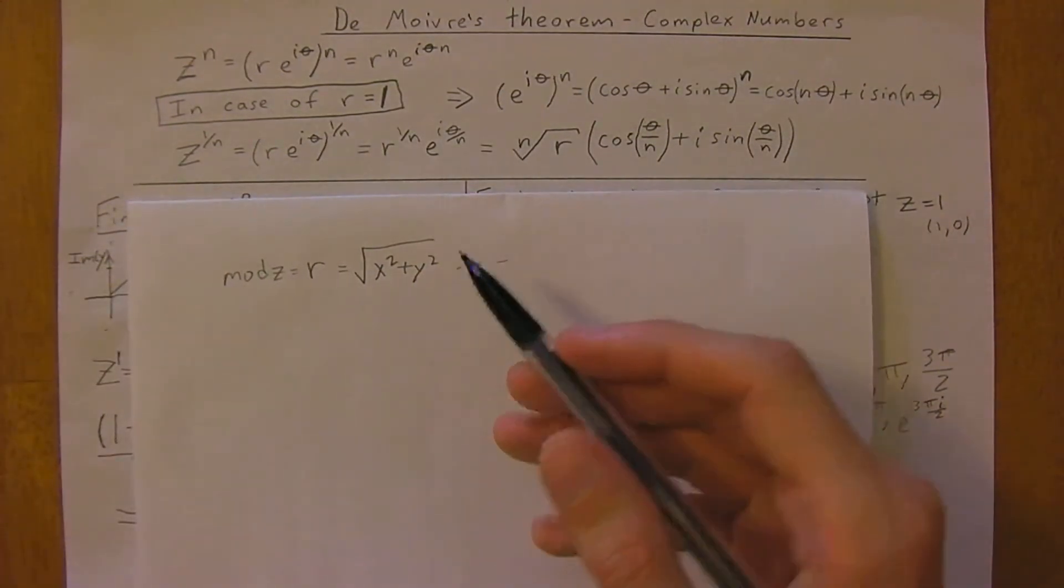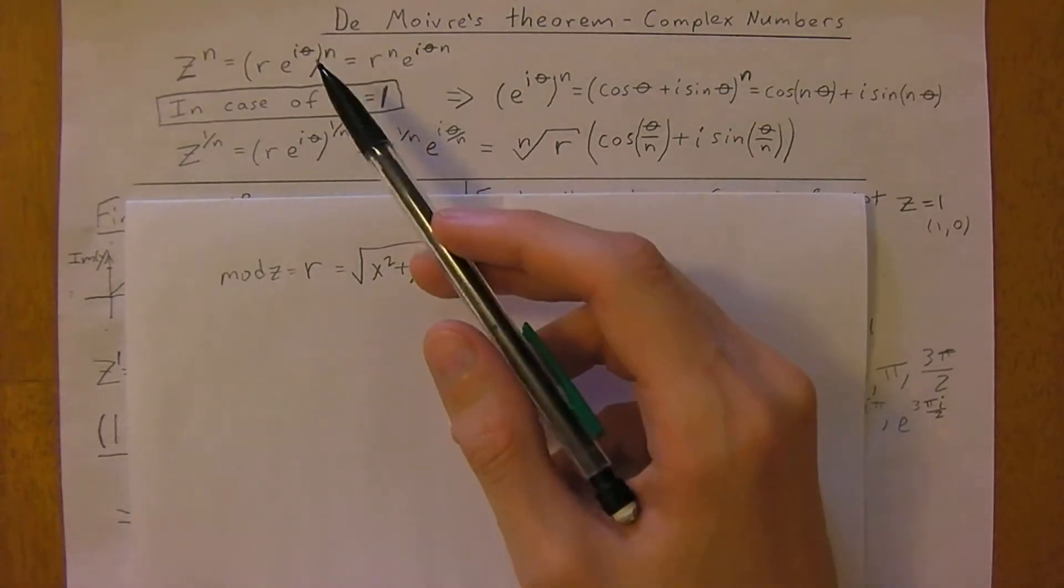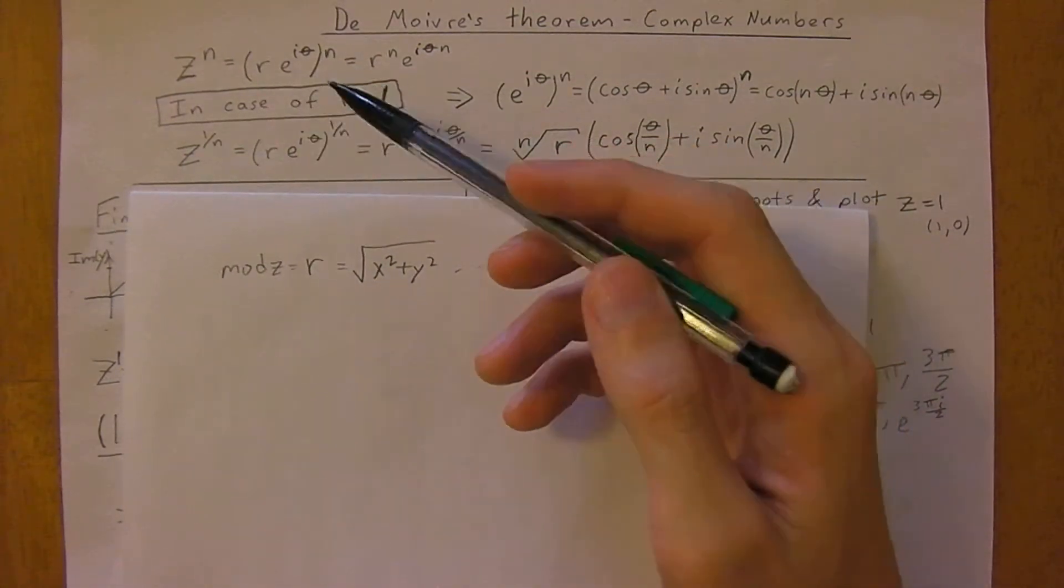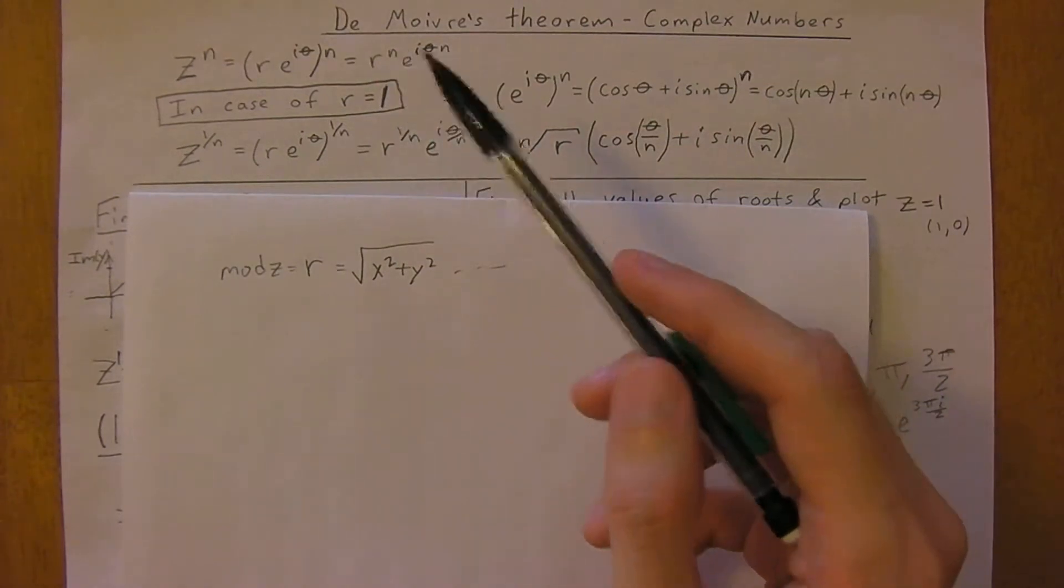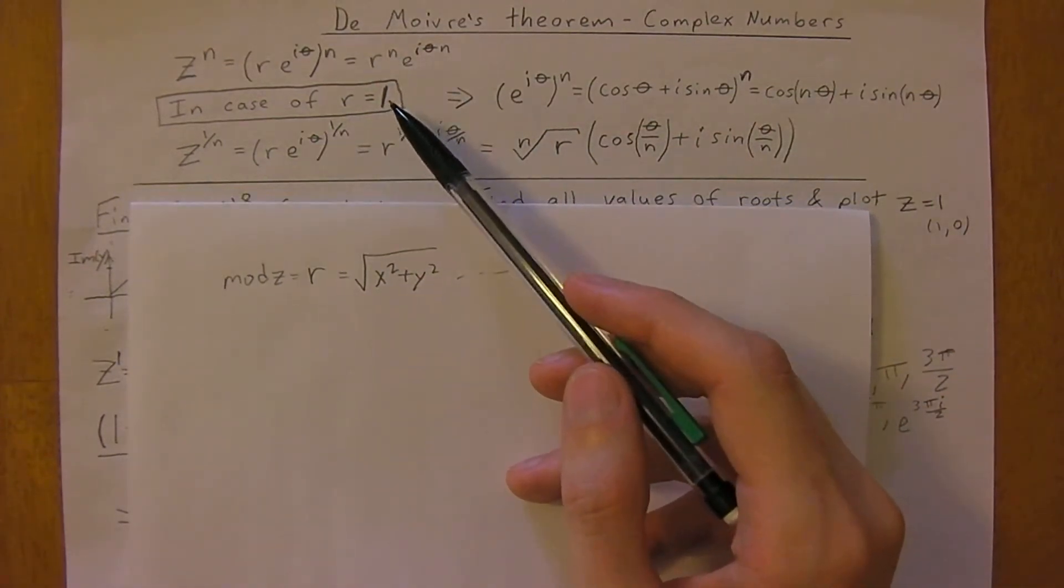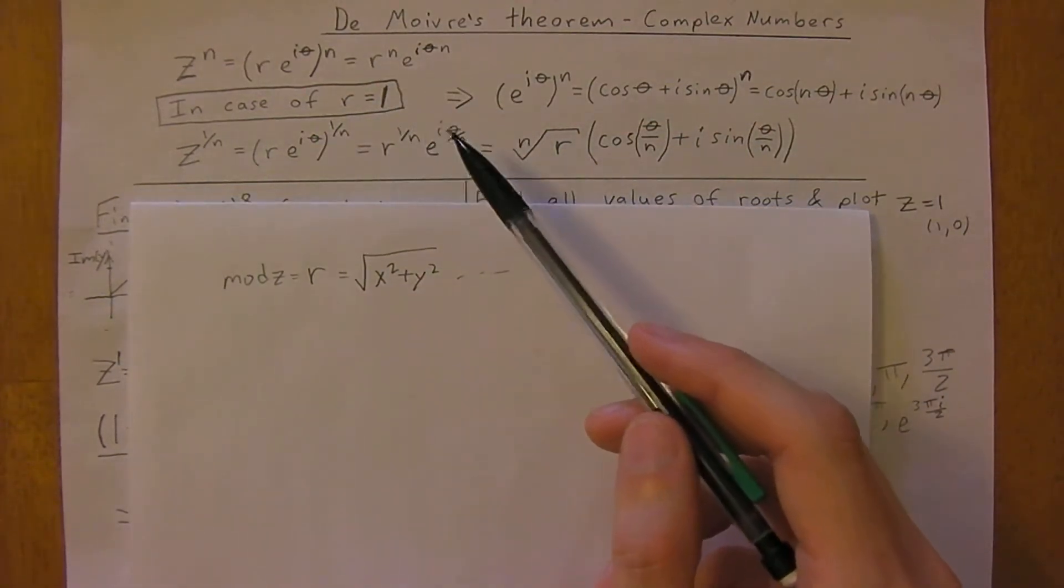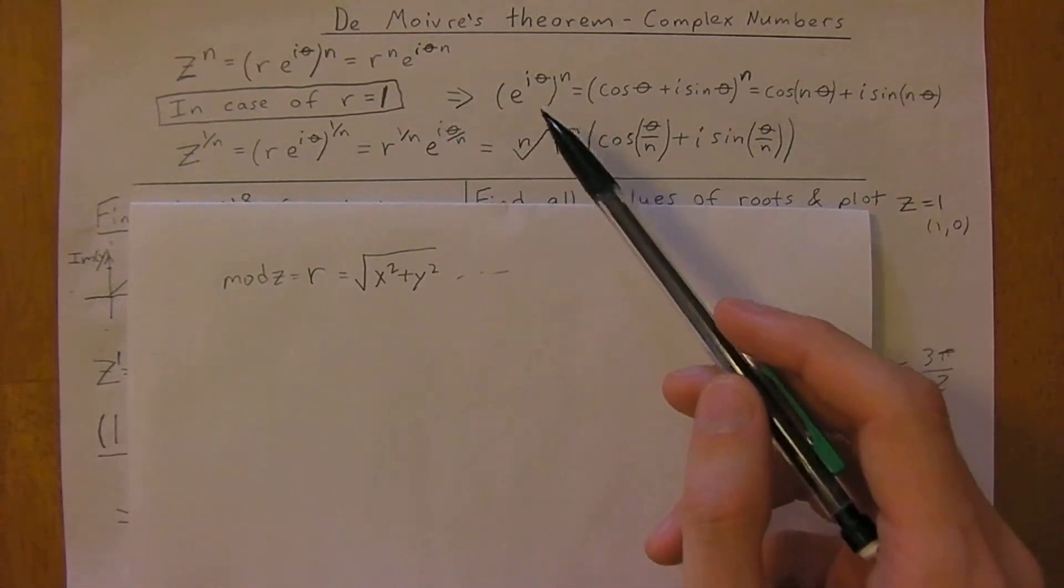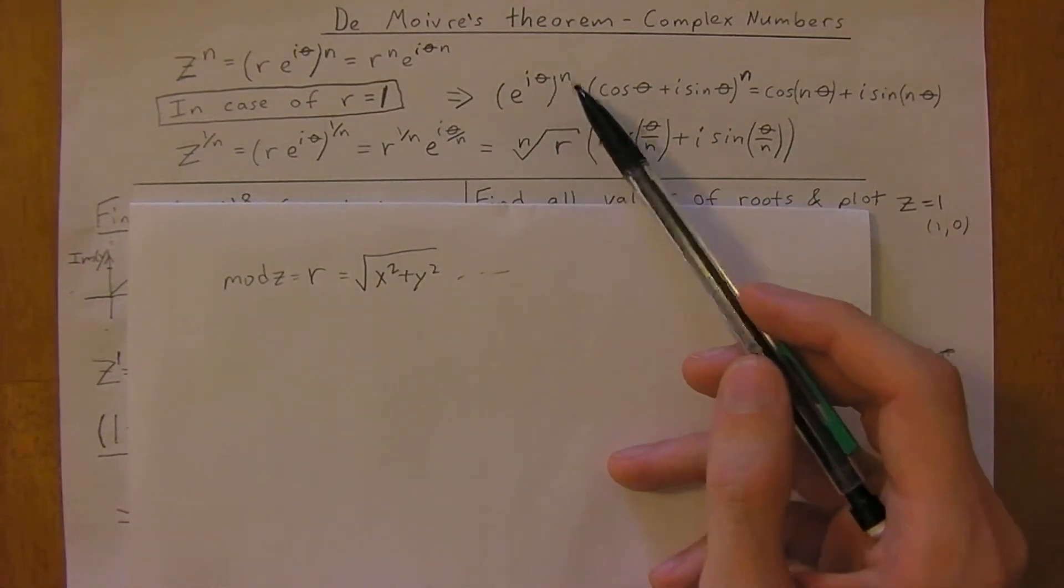We take the nth power of the radius and multiply the angle by n. In the case of r equals 1, which is a special case of particular interest, this equation becomes e to the i theta to the n.